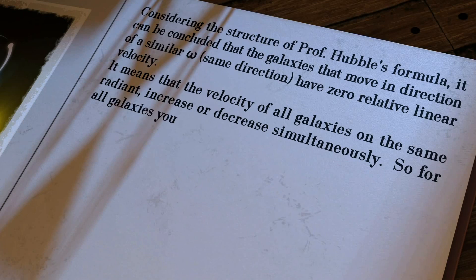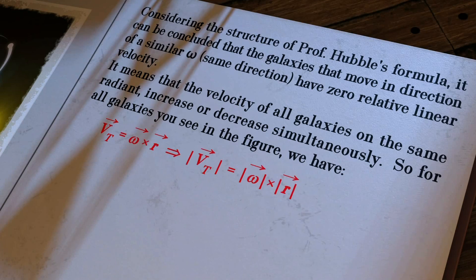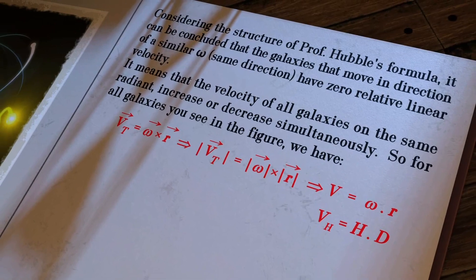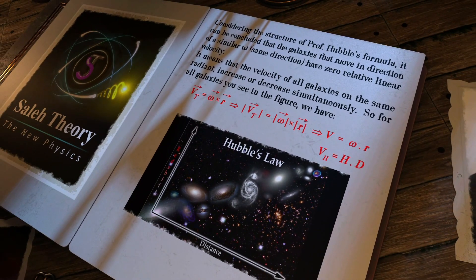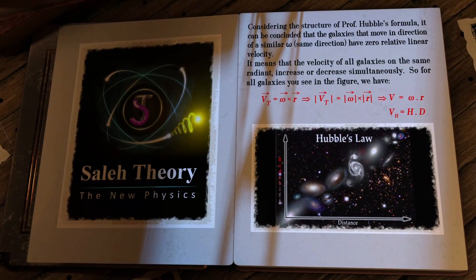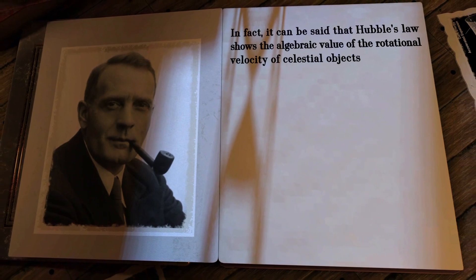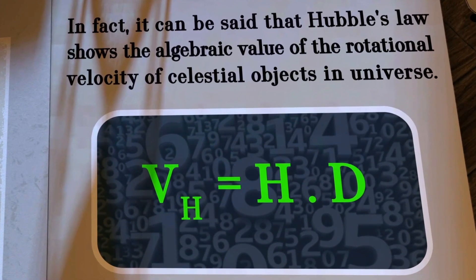So, for all galaxies you see in the figure, in fact, it can be said that Hubble's law shows the algebraic value of the rotational velocity of celestial objects in the universe.